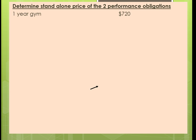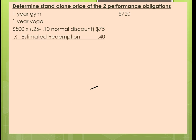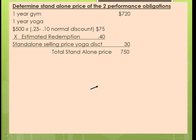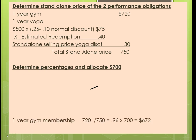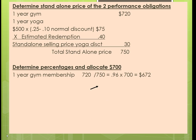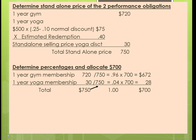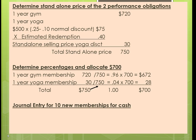Now we're going to determine the stand-alone price of the two performance obligations. We have the one-year gym membership at $720. The one-year yoga voucher has an approximate value of $75, but assuming only 40% will redeem them, that gives a value of $30. So the total stand-alone fair market value is $750. We allocate: $720 ÷ $750 = 96% × $700, and the yoga coupon is $30 ÷ $750 = $28, and that's how we allocate the $700.